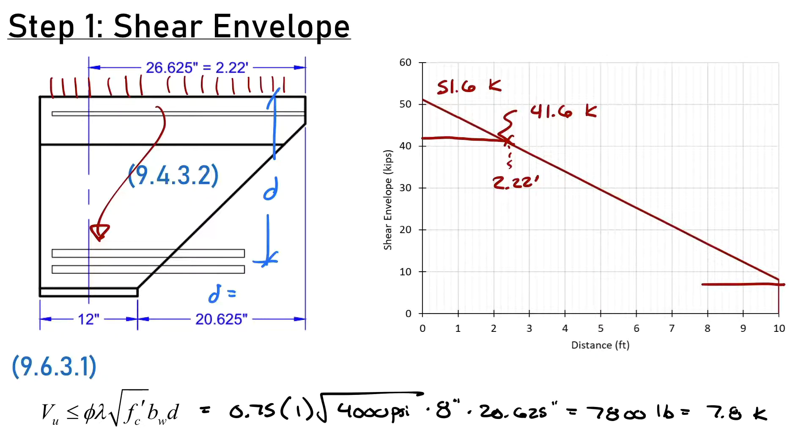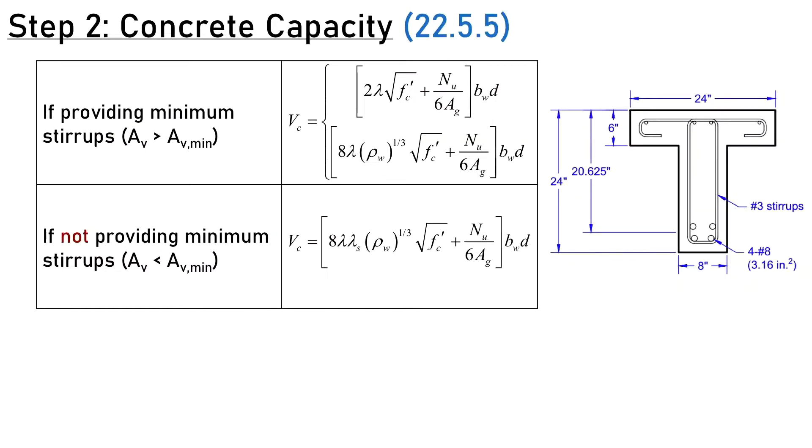Now we can talk capacity, starting with concrete capacity since I haven't designed any stirrups yet. In the 2019 code, there are two different cases for concrete capacity depending on whether we provide minimum stirrups. As we just checked, I must provide minimum stirrups everywhere, so the second case won't apply. We still have two expressions that depend on our reinforcement ratio rho_w. Rho_w is the area of steel divided by BWD: 3.16 square inches divided by 8 inches times 20.625 inches equals 0.019.